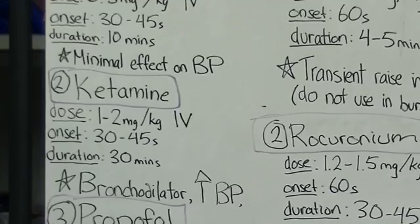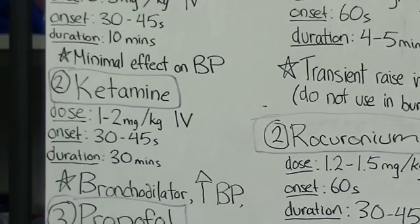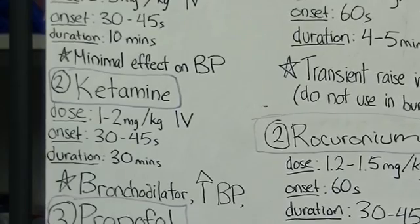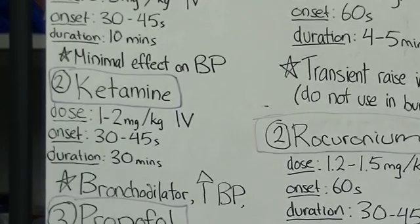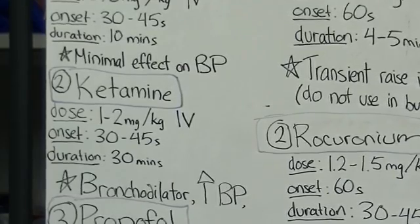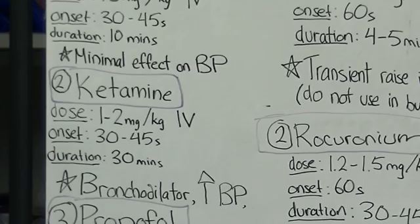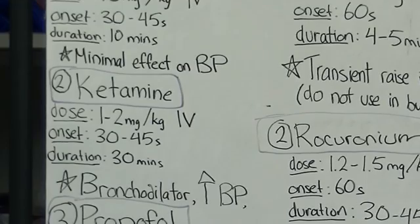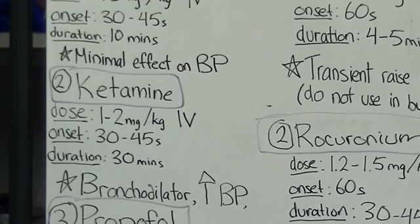Another property of Ketamine is that it causes a catecholamine surge, which provides a transient increase in blood pressure. Ketamine is thus a useful agent for hypotensive patients.